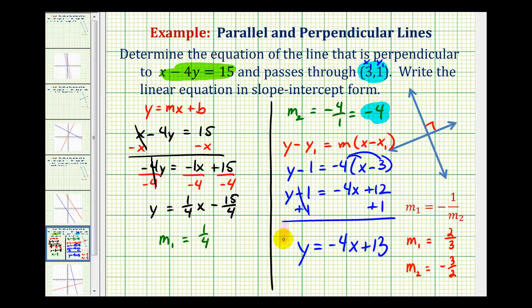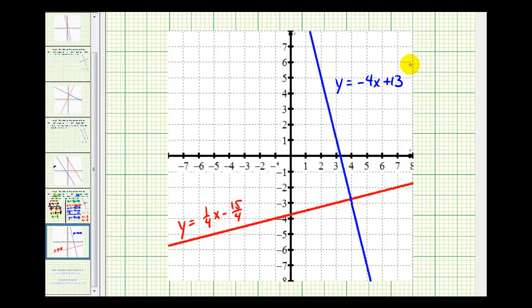Well, that was quite a bit of work, so let's go ahead and verify this graphically. Let's make sure that this line is perpendicular to this line here, and our line passes through the point (3, 1). So the red line is a graph of the given line. Remember, it had a slope of positive 1/4 and a y-intercept of negative 15/4.